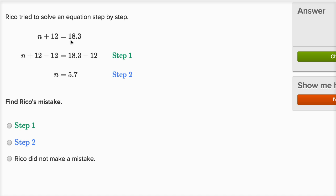All right, n plus 12 is equal to 18.3. All right, so over here you had n plus 12, and then Rico subtracts 12. So if he subtracts 12 from the left-hand side, he needs to subtract 12 from the right-hand side. And it looks like he does that. He had 18.3 and he subtracts 12. So he subtracts 12 from both sides.